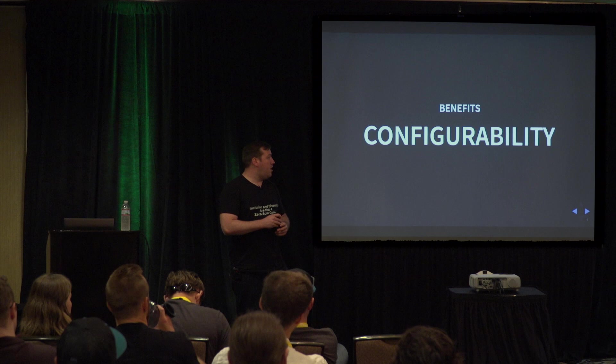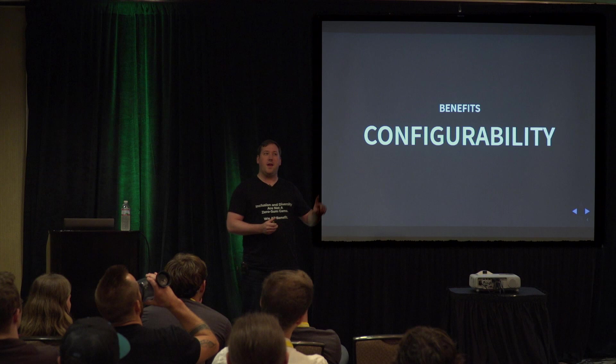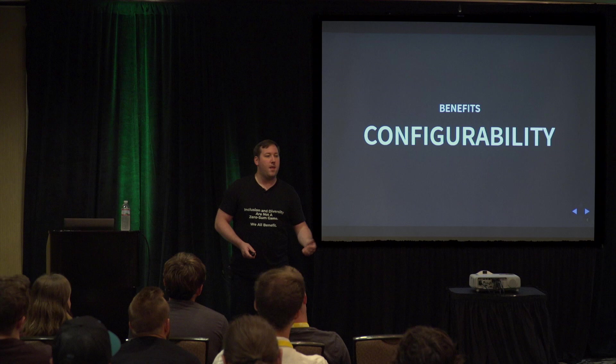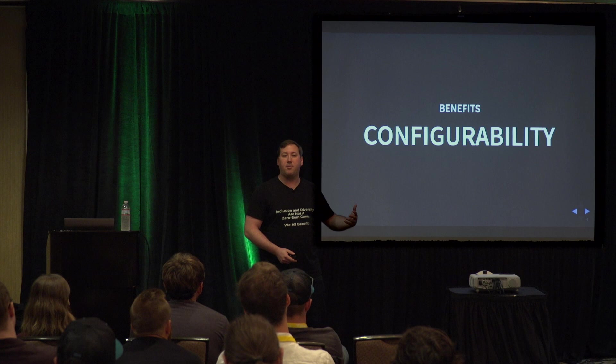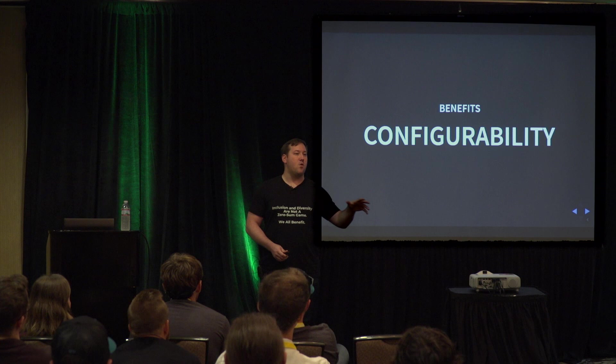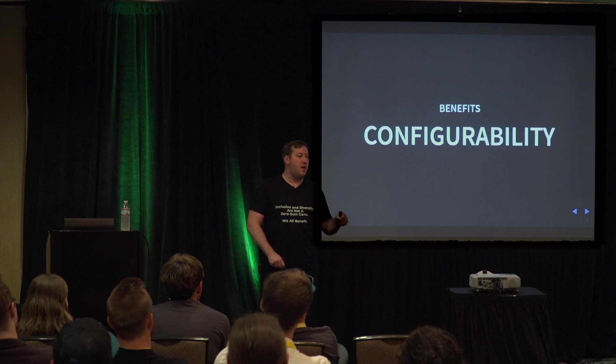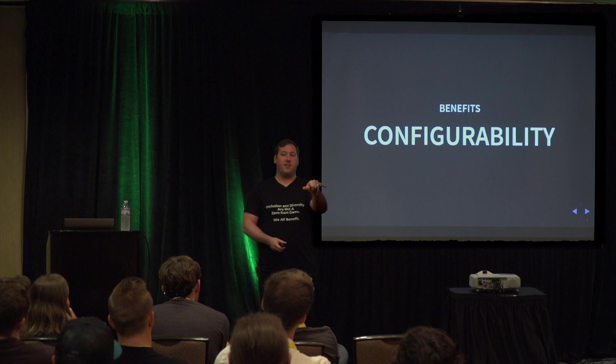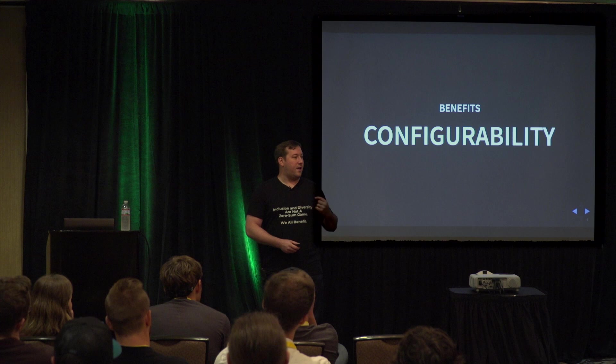Configurability: Akka.NET uses HOCON — Human-Optimized Config Object Notation — which is essentially JSON configuration on steroids, with comments and other features, living inside your app config. All actors you write are configurable via that configuration. At runtime or deployment time, your ops folks can say 'we need 30 more of those actors' — add one line to the config file and now there will be 30 actors. You can scale up and out just through configuration.